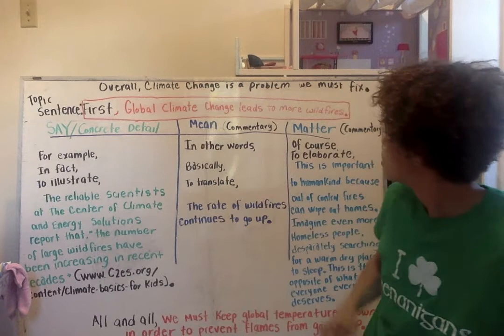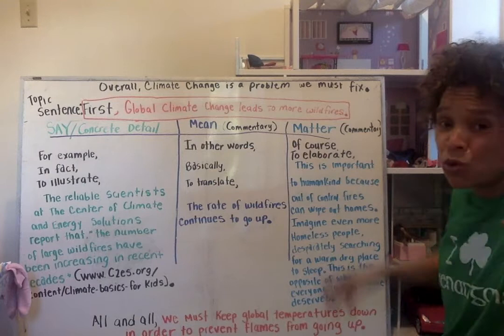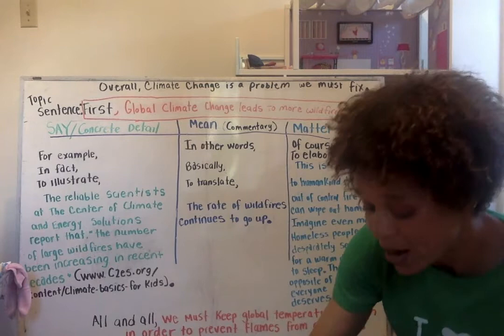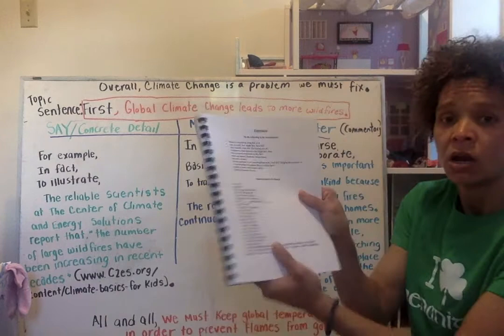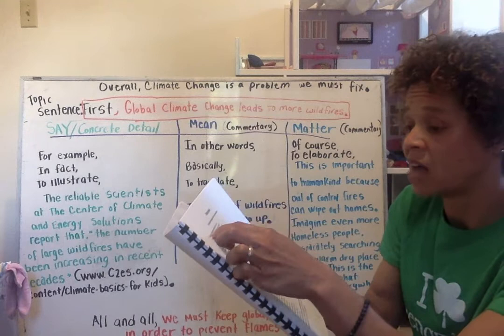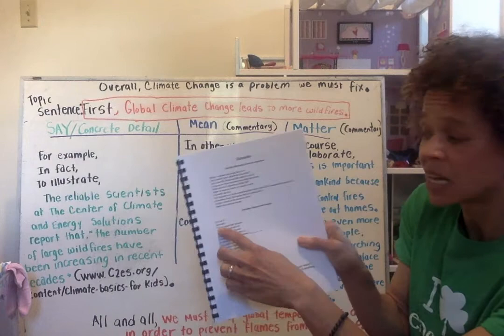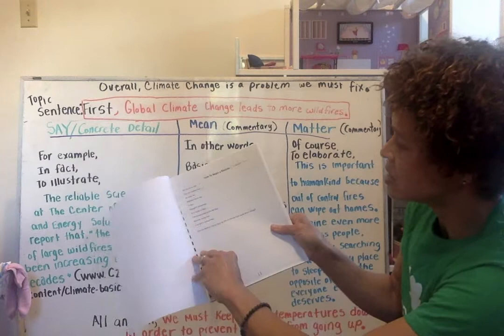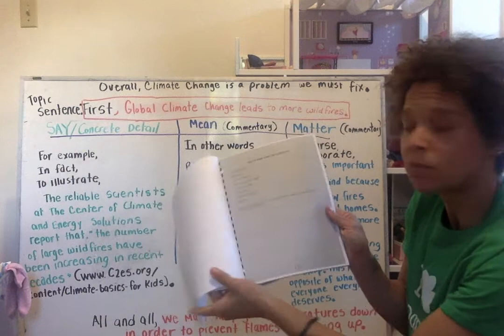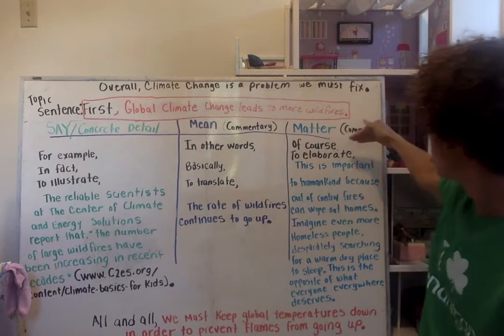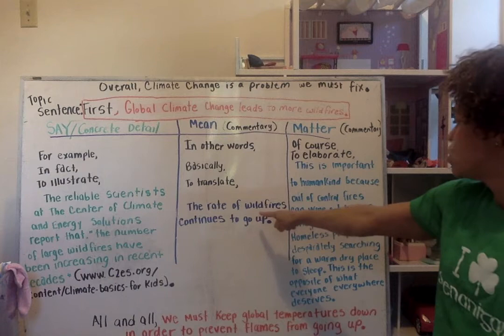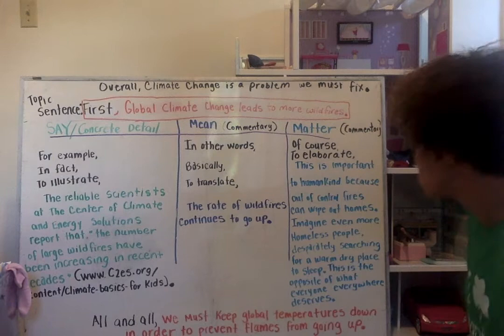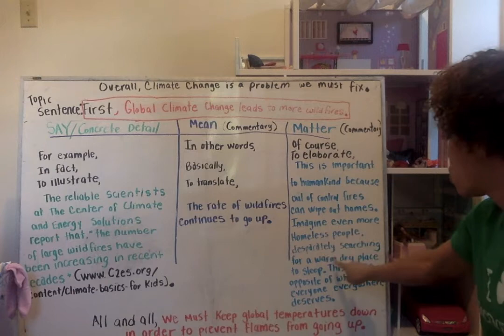Now I get to the matter section. Why does that matter? Who cares that the rate of wildfires is going up? If I'm stuck I can go to my book and it gives me tons of ways to elaborate. I could make a comparison using like or as, I could tell readers to do something, I could start a sentence with it is as if. But naturally I'm going to start with a transition. To elaborate — this is important to humankind because out of control fires can wipe out homes. Imagine even more homeless people desperately searching for a warm, dry place to sleep. This is the opposite of what everyone deserves.